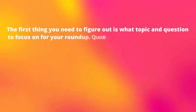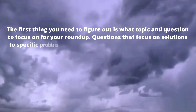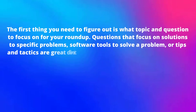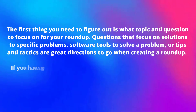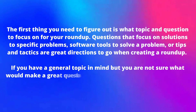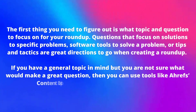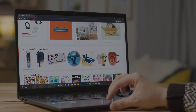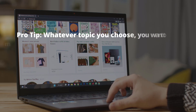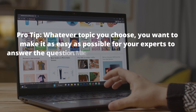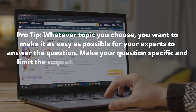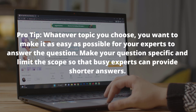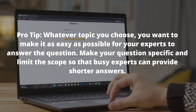The first thing you need to figure out is what topic and question to focus on for your roundup. Questions that focus on solutions to specific problems, software tools to solve a problem, or tips and tactics are great directions to go. If you have a general topic in mind but are not sure what would make a great question, you can use tools like Ahrefs, Content Explorer, or Buzzsumo to get ideas. Whatever topic you choose, you want to make it as easy as possible for your experts to answer — make your questions specific and limit the scope so that busy experts can provide shorter answers.